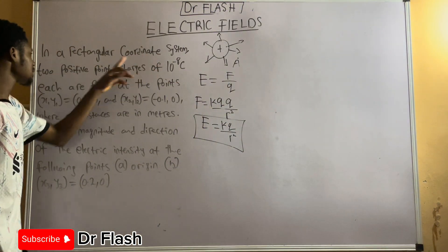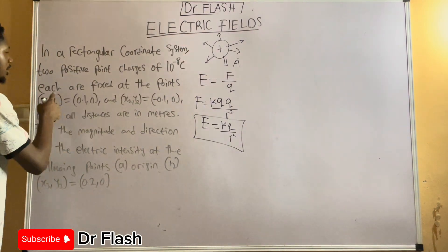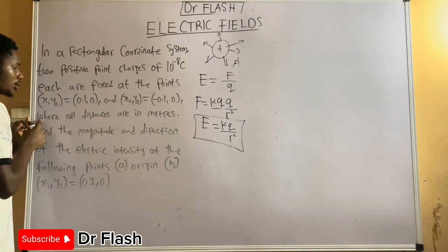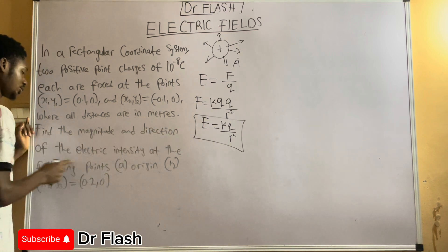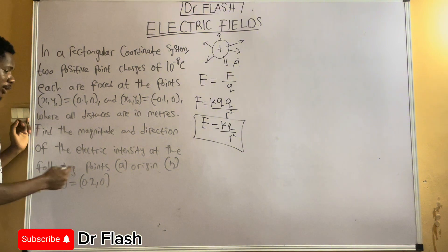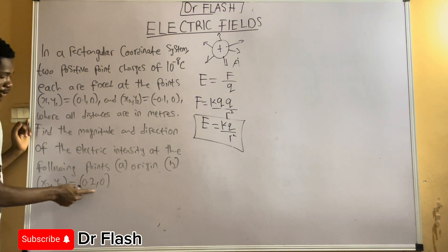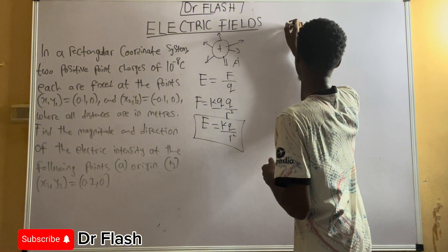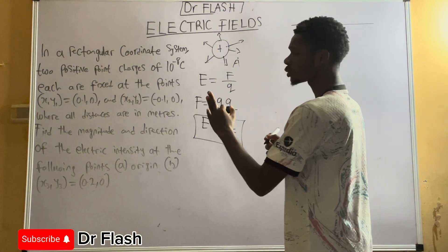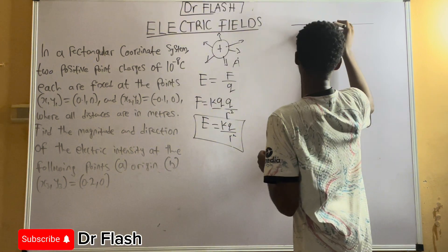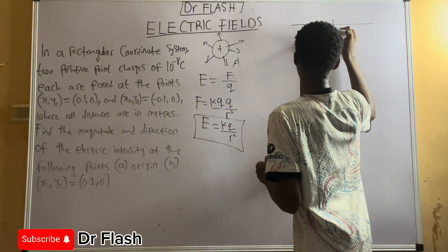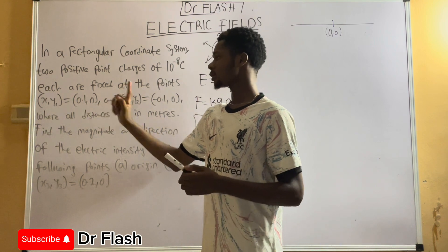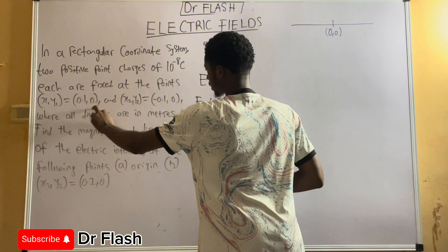The problem on the board says: in a rectangular coordinate system, two positive point charges of 3×10⁻⁸ coulombs each are fixed at the points x1,y1 = (0.10, 0) and x2,y2 = (−0.10, 0), where all distances are in meters. Find the magnitude and direction of the electric field intensity at: (a) the origin, and (b) the coordinate (0.2, 0). To do that we need to draw a diagram. The origin is at the center, which is (0, 0).